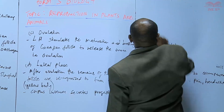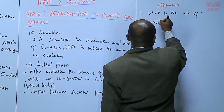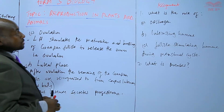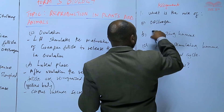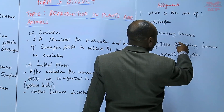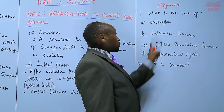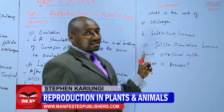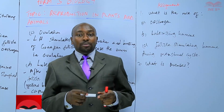We'll now have an assignment capturing what we have discussed. Question one: what is the role of (a) estrogen, (b) luteinizing hormone, and (c) follicle-stimulating hormone during the menstrual cycle? Lastly, what is menses? We'll stop there until next time. Goodbye.